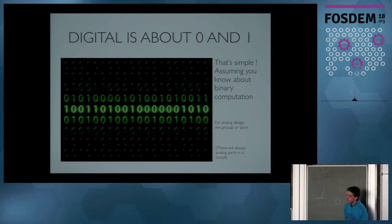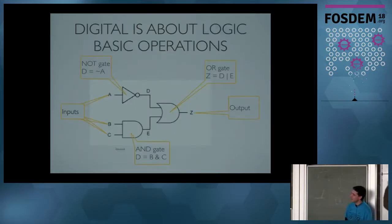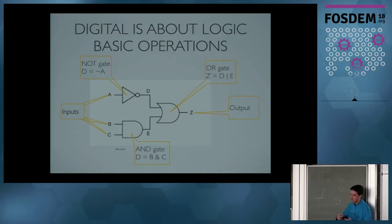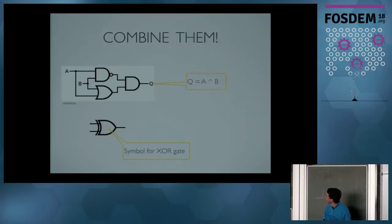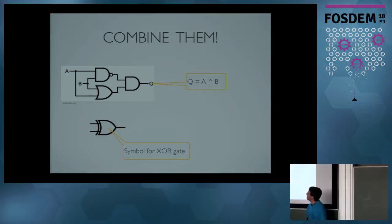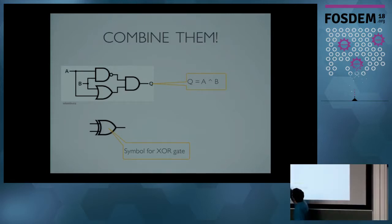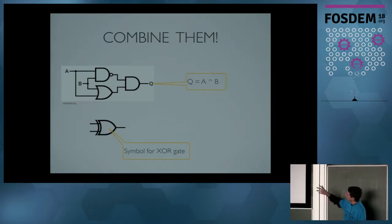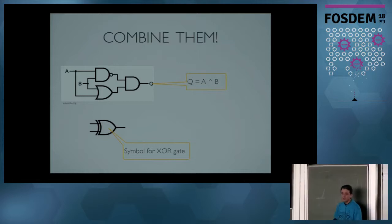Digital is about zeros and ones. And here I assume you know a little bit about digital computation. That means the basic operations used in almost every digital chip: OR, AND, and NOT. That is the basic building block of a chip, and the purpose of digital design is to combine these basic blocks to do something more complex. So for example, if you associate gates like this, you get the XOR function using only AND, NOT, and OR gates. The circle at the output of a gate means it's an inversor, so you get the NOT of an AND. You can combine gates to create new gates.